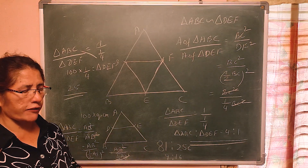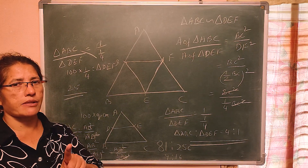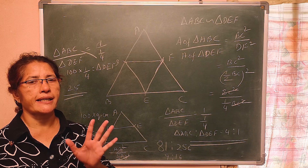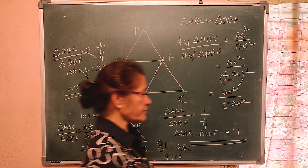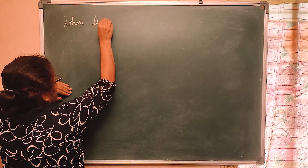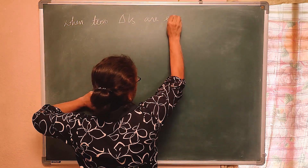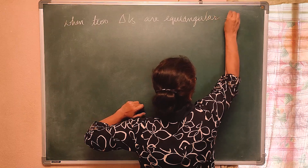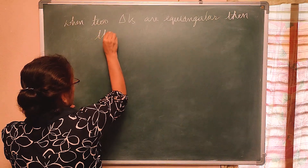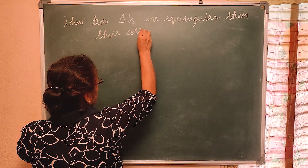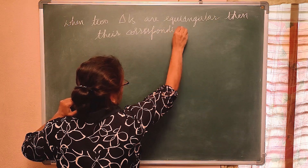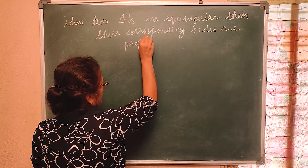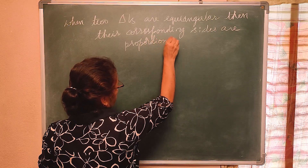Now, regarding the criteria for similarity of triangles — sometimes the similarity criteria theorem is asked to be proved. When two triangles are equiangular, you have to prove that the sides are proportional. Let me solve and prove that theorem too.